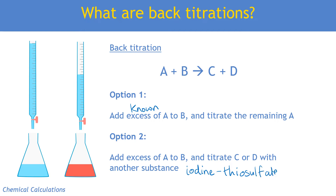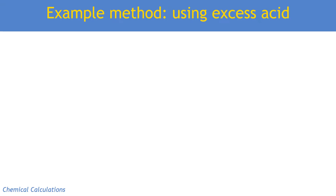Option two involves adding an excess of A to B to produce a product such as iodine, which can then be titrated with another substance — thiosulfate. Many redox reactions involve things that react with iodide ions to make iodine, and iodine can be titrated with thiosulfate in a reliable titration with a very clear end point. That will be the focus of a separate video. For now, let's look at an example using option one — adding excess acid and finding how much is left over.